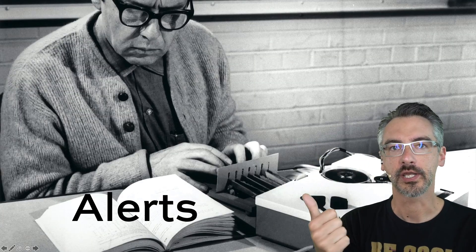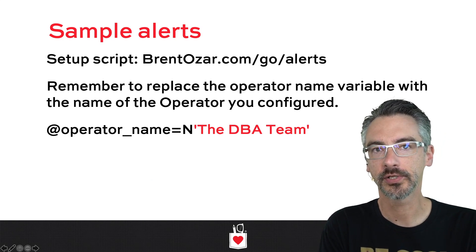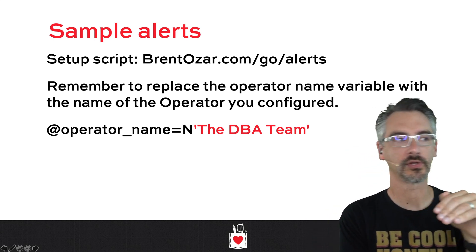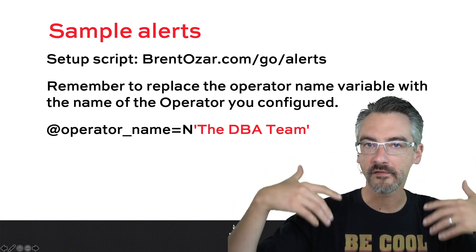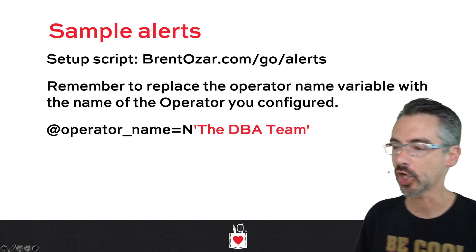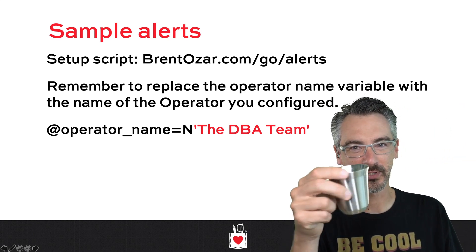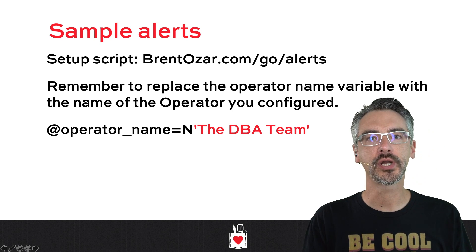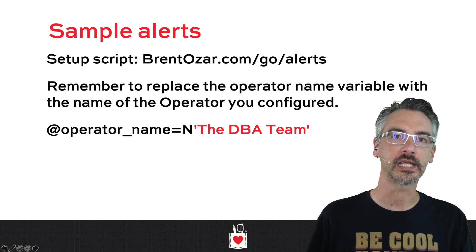Now we've established the mail service and the people we're going to email — what are we going to send them? If you go to brentozar.com/go/alerts, I'm going to give you a script of the alerts I recommend setting up. For example, certain severity levels should all get email alerts when the SQL Server service finds corruption or when there's a catastrophic error executing T-SQL. All you have to do is hit Execute on that script. The one thing you have to do is a find-and-replace inside that script to put in the appropriate operator name, like 'competent people' or whatever your operator is named.